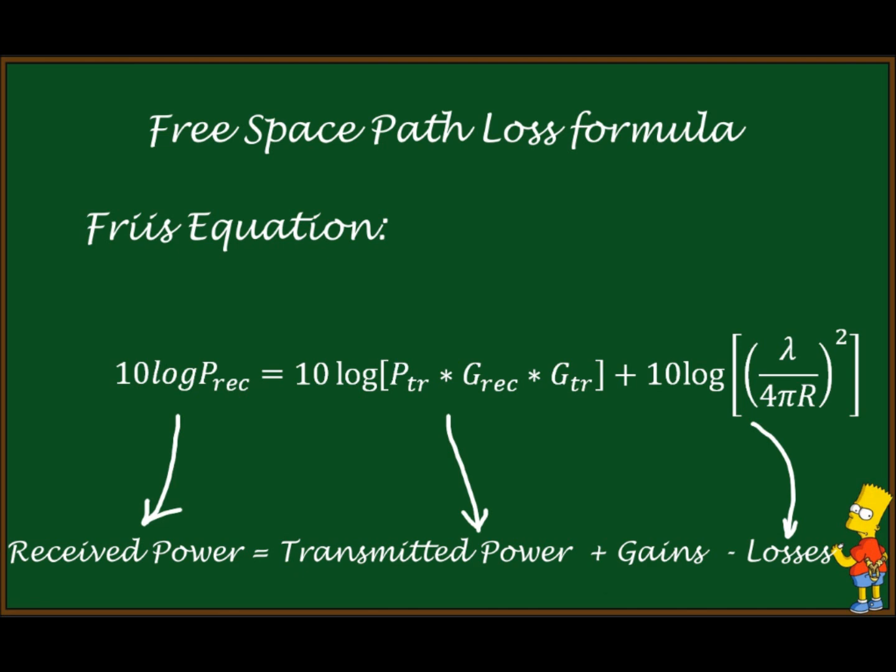Since received power is transmit power with these total gains minus total loss, also known as link budget. This other part of the formula will give us the free space loss of electromagnetic wave. Everything, of course, in dBs.